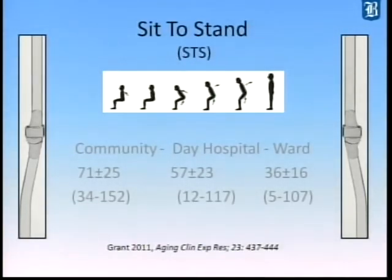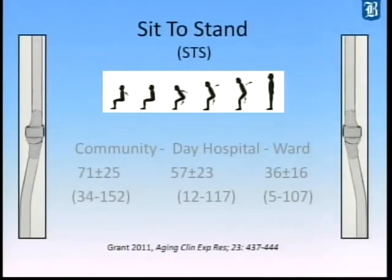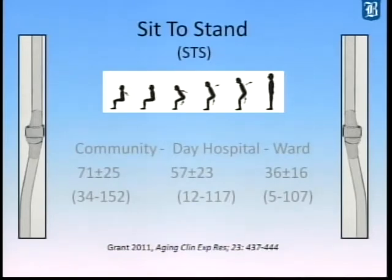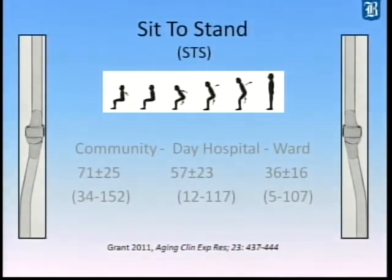We can compare that to the activity or cycle level of a drop-lock KAFO, where the sit-to-stand exercise in a community setting cycles 71 times a day, in a day hospital 57 times, and in a ward 36 times. That is of course much lower than what we would see in a fully compliant stance control patient, because the joint is unlocking with every step rather than just how many times they're going through that sit-to-stand or stand-to-sit cycle.